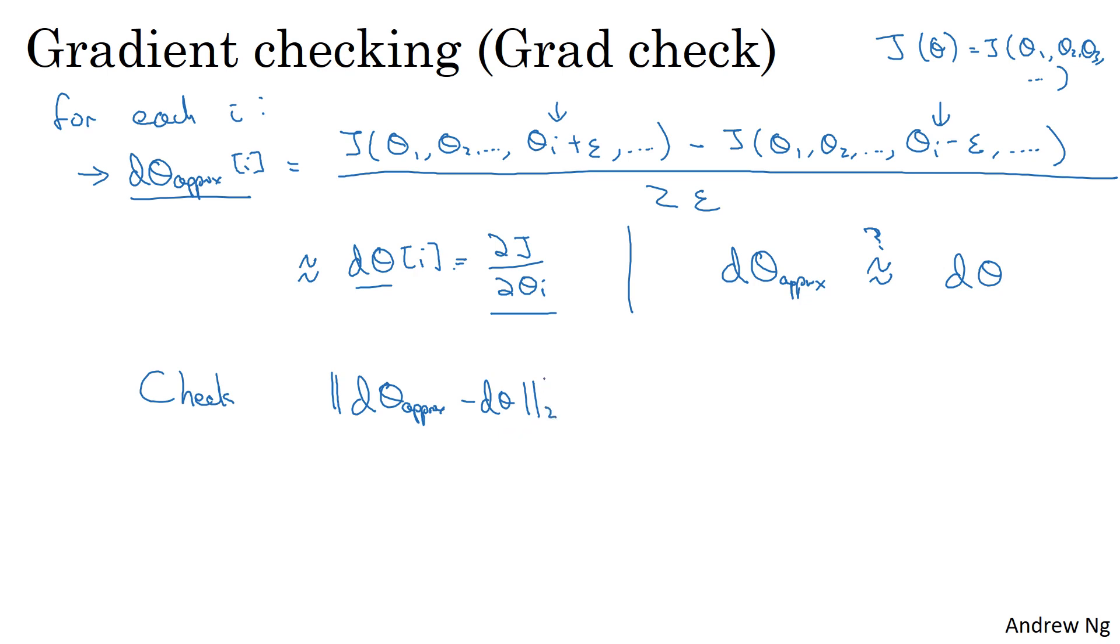I would compute the Euclidean distance between these two vectors, D theta approx minus D theta. So just the L2 norm of this. Notice there's no square on top. So this is the sum of squares of elements of the differences, and then you take a square root to actually get the Euclidean distance.